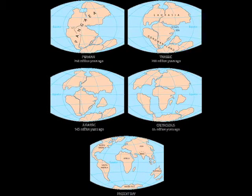They move at relatively slow speeds, generally only a few inches or centimeters per year. However, over the course of millions of years, the continents can end up in very different geographical arrangements.